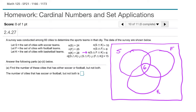Now we move out from there. If we look at the overlap of soccer and football, we know that N(S∩F) — the cardinality of that overlap region — has a total of 8 cities. We've already accounted for 6 in the center, so the remaining 2 have to be in the S∩F only region, giving us 2 there.